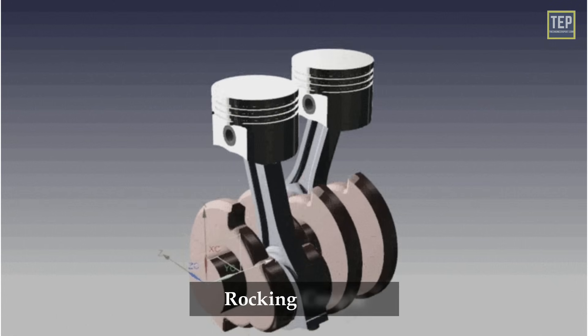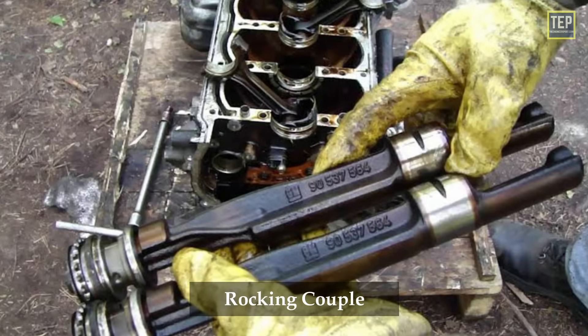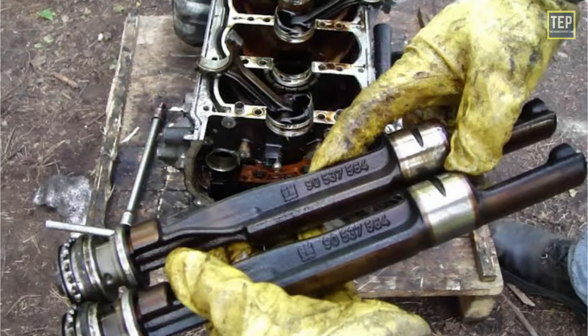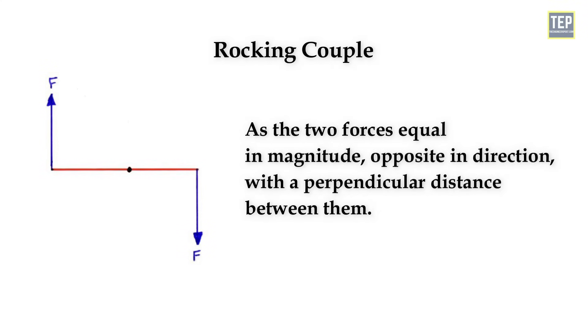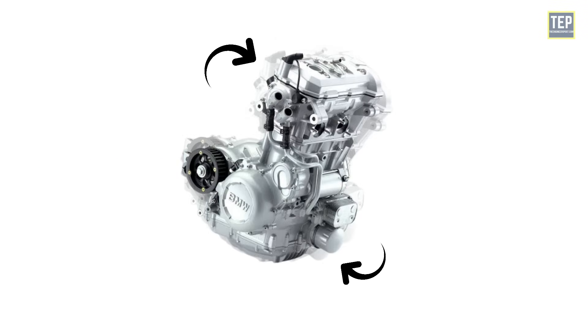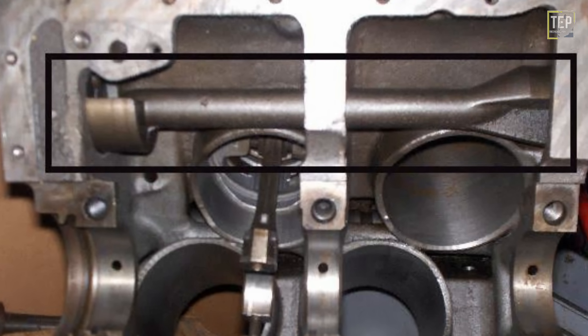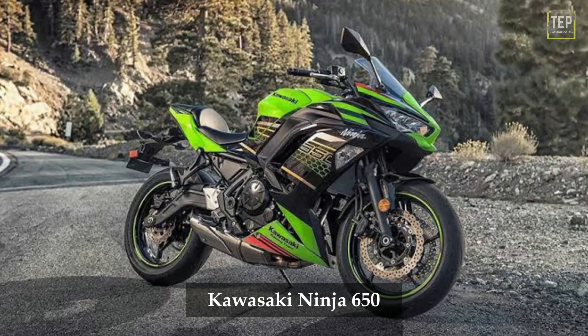The design requires using a balance shaft to reduce the vibration. A rocking couple is defined as two forces equal in magnitude, opposite in direction, with a perpendicular distance between them. You feel this as vibration in a motorcycle. Engineers counter with a counterbalance shaft in a modern parallel twin, like in the Kawasaki Ninja 650.